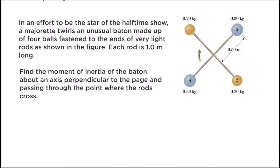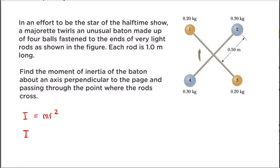We must remember that in order to solve for the Moment of Inertia of objects rotating about an axis of rotation where the object is outside of the axis — just like these balls, because the axis of rotation is right here in the middle — the formula we are going to use is I = MR², where Moment of Inertia equals the mass of the object multiplied by the distance from the axis of rotation squared. Since we want the total Moment of Inertia of the baton, I_T equals I1 plus I2 plus I3 plus I4.